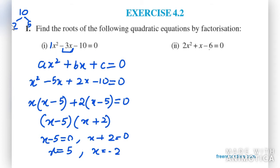Moving on to the second part: 2x² + x - 6 = 0. We again split the middle term by taking the product of a and c, which is 2 × 6 = 12. We need factors of 12 that sum to give x. We can take 4x and -3x, since 4 and 3 are factors of 12.